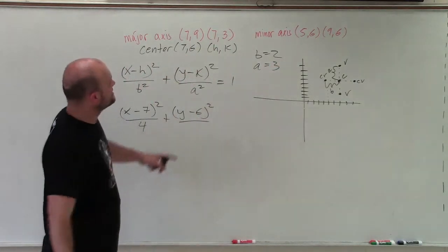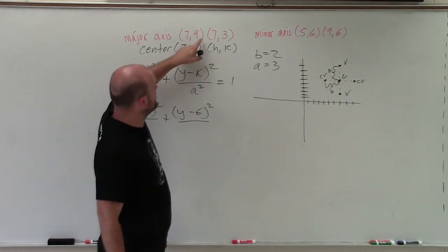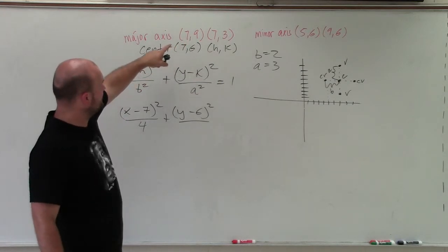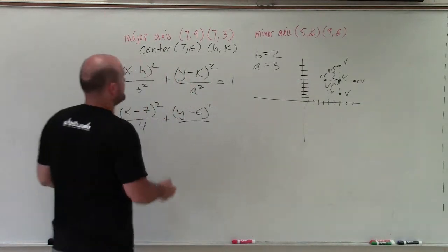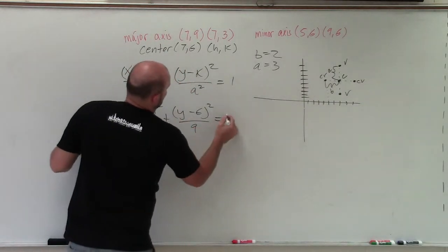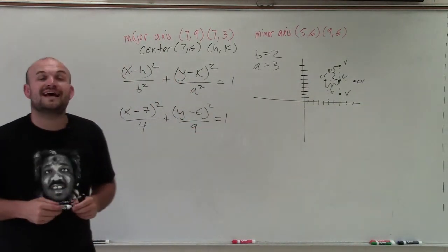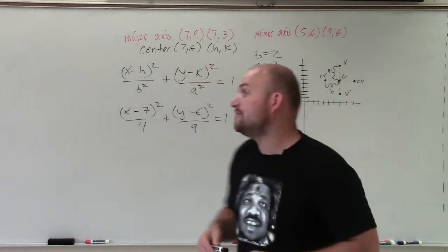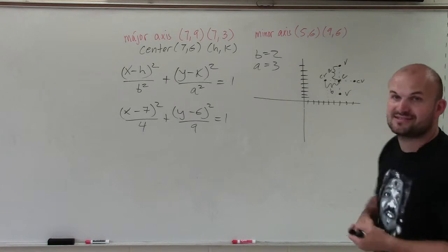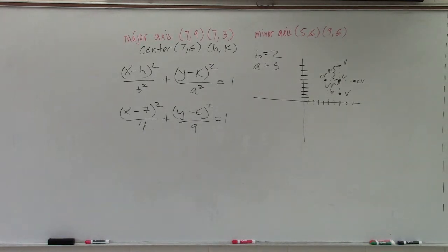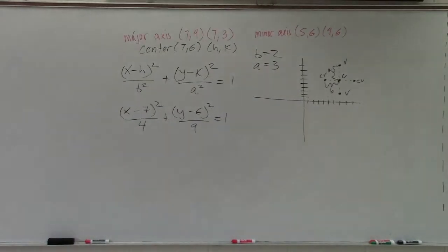And you can see the distance from my major axis vertices to the center is three. So a equals three, a squared equals nine, equals one. So there you go, ladies and gentlemen. That is how you write the equation of your ellipse, given the coordinates for the major axis and minor axis. Thanks.